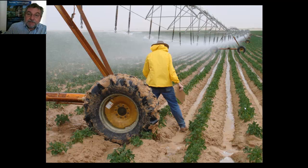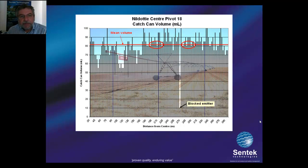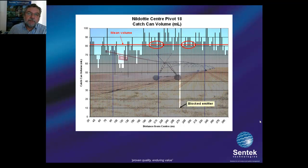The same applies for pivots. It's a slightly different approach, but here is an outcome showing from the center of the pivot going to the outside from left to right. You can see there is quite an under or over performance of application rate, and there is even a blocked sprinkler which you can see. You can use these sort of pictures to site your probes more properly within the pivot to make sure you really catch the average precipitation.